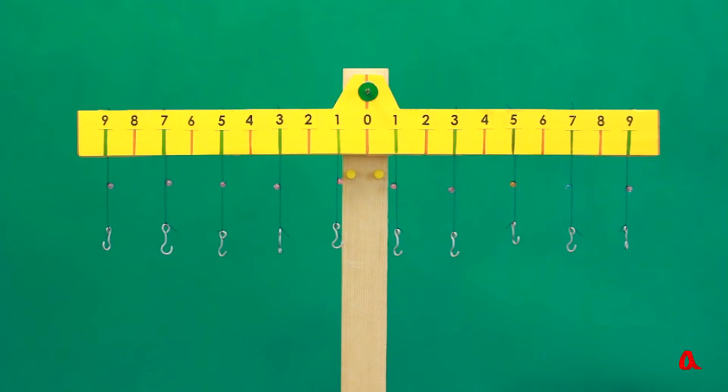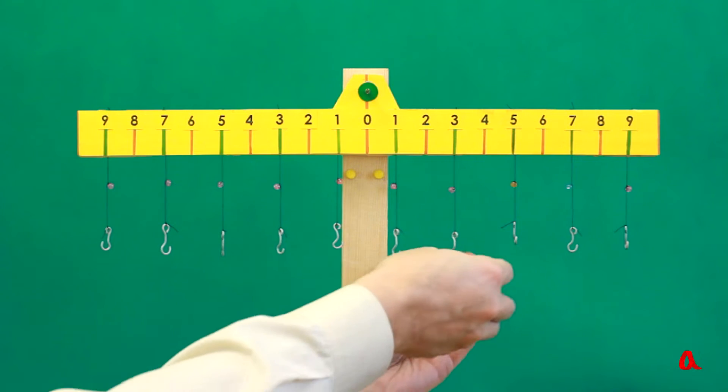And what should be the distances from the lever's axis to the loads of different weights for the lever to be in equilibrium? We know from experience that the arms should be inversely proportional to the loads.